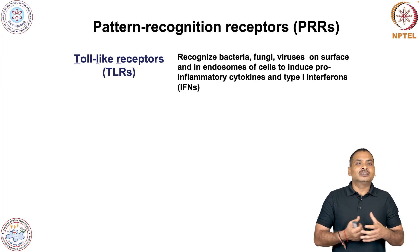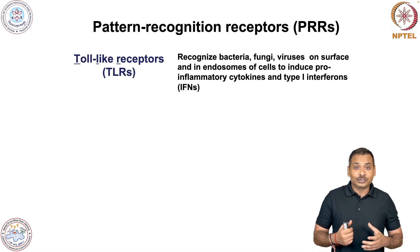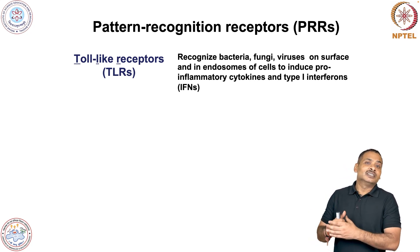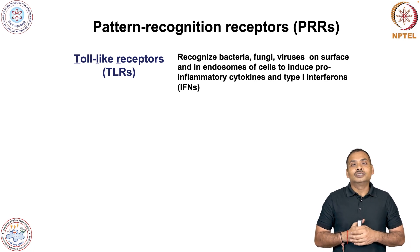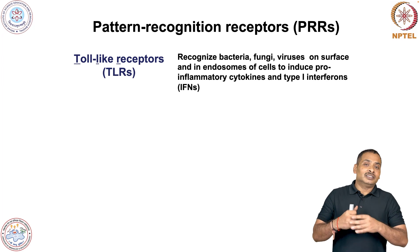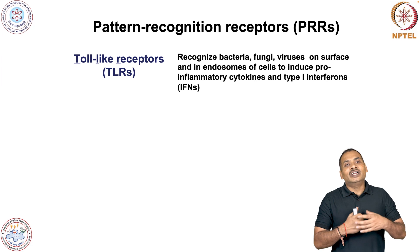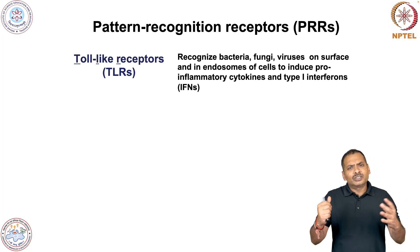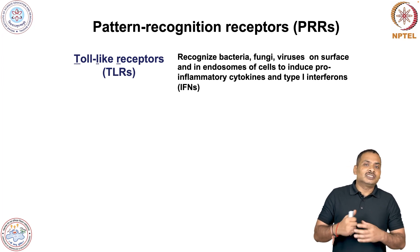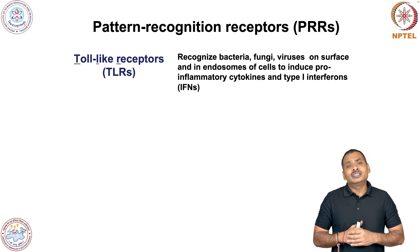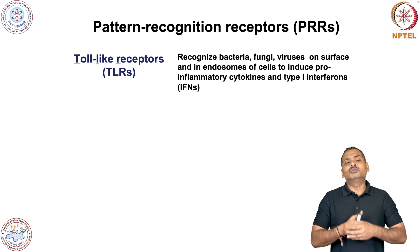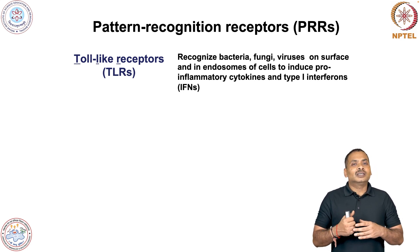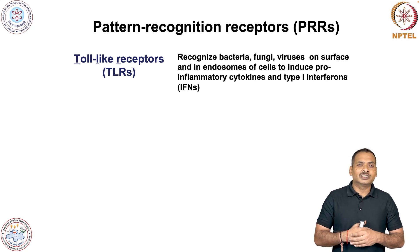These intracellular vesicles are called endosomes, and depending on the stage we call them phagosomes or phagolysosomes. Upon recognition, TLRs activate a cascade of signaling that results in the production of pro-inflammatory cytokines. In addition to pro-inflammatory cytokines, they also induce antiviral cytokines broadly called type 1 interferons. Recently it was also reported that type 3 interferons play a very important role in antiviral immunity.